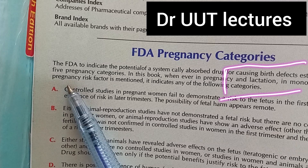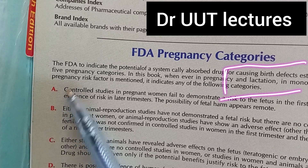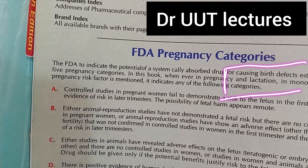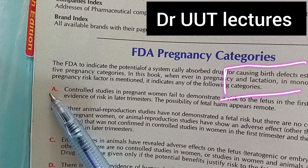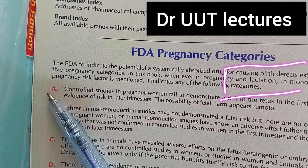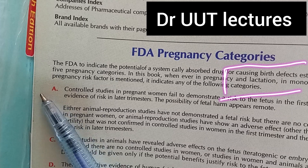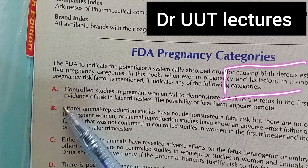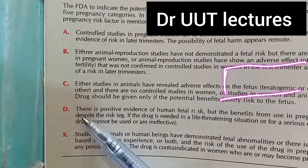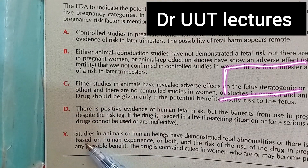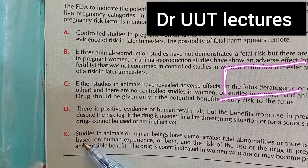Accordingly, the medications are classified into A, B, C, D, and X categories. Those placed in category A are safe and can be taken. Whereas as you go downward toward X, the medications in category X are actually contraindicated — they should not be taken.